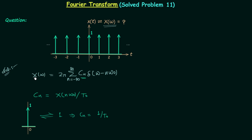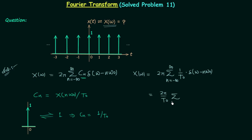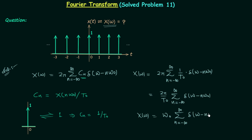Now that we have Cn, we can calculate X(ω). Substituting into the formula gives 2π times the summation from n = −∞ to ∞ of (1/T₀) · δ(ω − nω₀). Taking 1/T₀ out of the summation gives 2π/T₀ times the summation of δ(ω − nω₀). Since 2π/T₀ equals the fundamental angular frequency ω₀, the final answer is X(ω) = ω₀ · Σ δ(ω − nω₀).